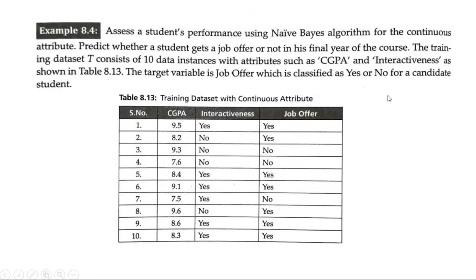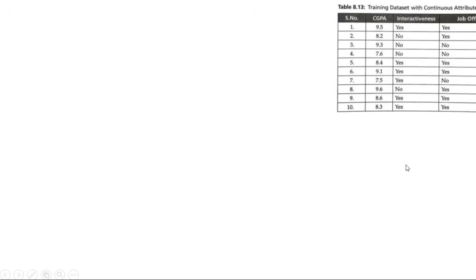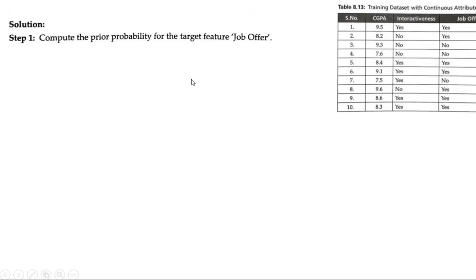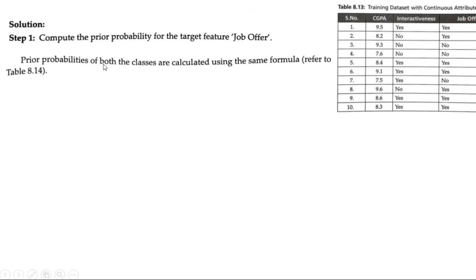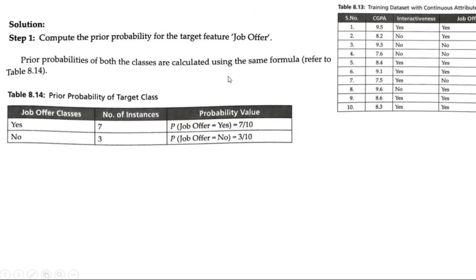This is the training dataset given. Upon this we apply the Naive Bayes algorithm. A test data will be given, and for that test data you need to predict whether the job offer is classified as yes or no. Let's begin. This is the input table or training dataset for the continuous attribute. The first step remains the same for any Naive Bayes algorithm, whether discrete or continuous: compute the prior probability for the target feature job offer — yes or no.